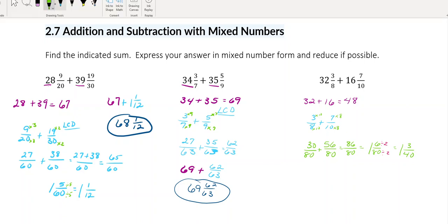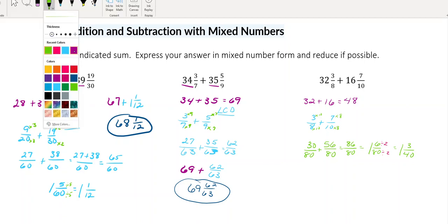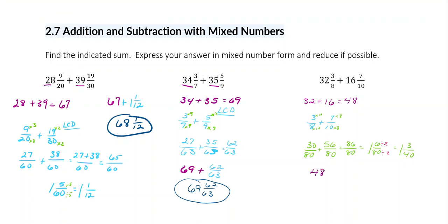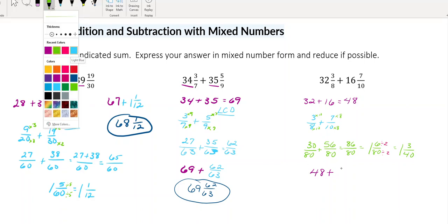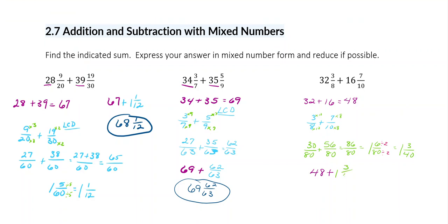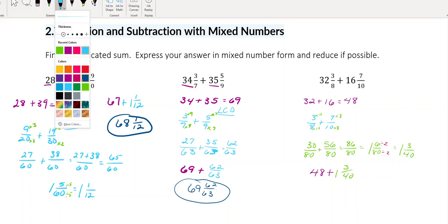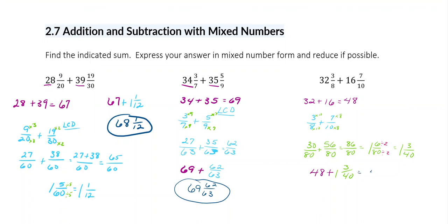So now for the last part, I want to add my whole number of 48 plus the fraction part of 1 and 3 fortieths. So when I add 48 and 1 I get 49, and since I don't have an additional fraction, it's just 3 fortieths. So I hope this helps with understanding mixed numbers.